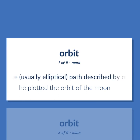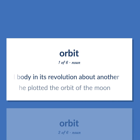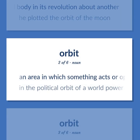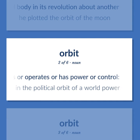Orbit: The usually elliptical path described by one celestial body in its revolution about another. Example: He plotted the orbit of the moon. Also: an area in which something acts, operates, or has power or control — as in, in the political orbit of a world power.